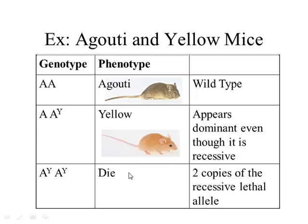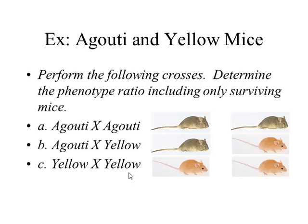Take a second and try to perform the following crosses. You can see why initially people might have thought yellow was dominant to agouti. Go ahead and cross that on your own in the space provided. Pause the screen until everyone is finished. At this point, I'm hoping each one of you has done three separate crosses and determined the phenotype ratios.